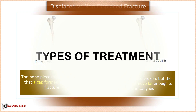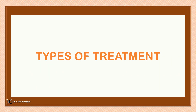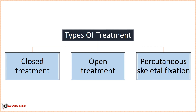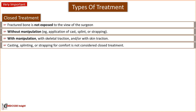There are three major approaches to treat fractures: closed treatment, open treatment, and percutaneous skeletal fixation. Closed treatment means the fractured bone is not exposed to the view of the surgeon. Closed treatment of a fracture or dislocation may be performed without manipulation, such as application of a cast, splint, or strapping, or with manipulation using skeletal traction or skin traction. Use of casting, splinting, or strapping solely to temporarily stabilize the fracture for patient comfort is not considered closed treatment.